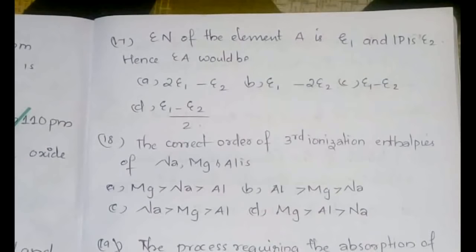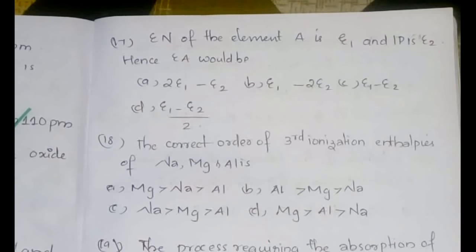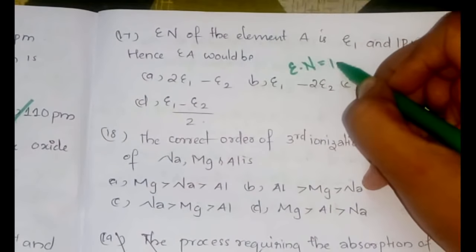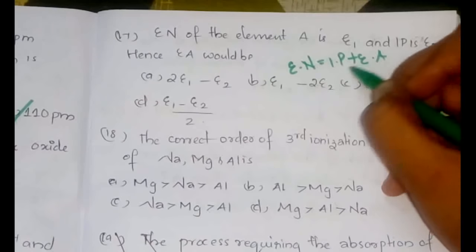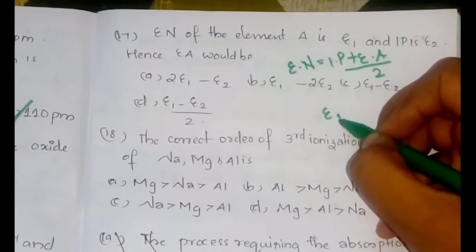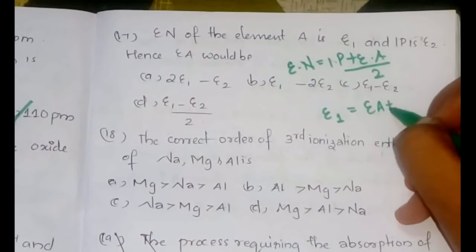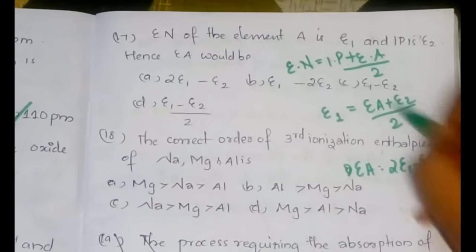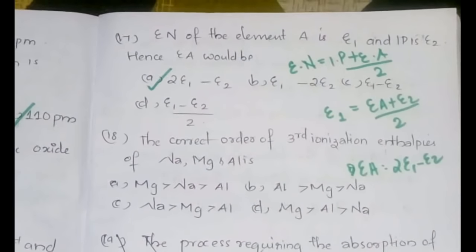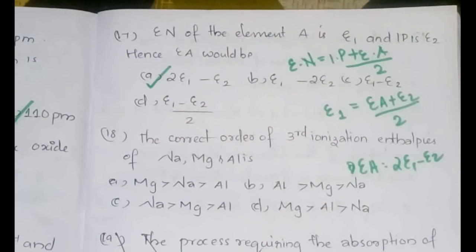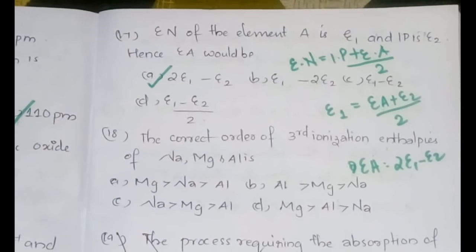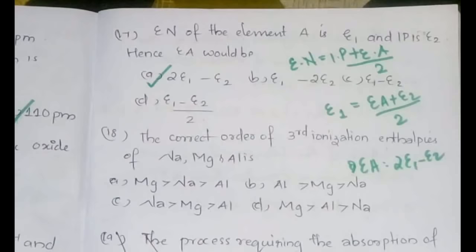The seventeenth question: electronegativity of element A is E1 and the ionization potential is E2, hence the electron affinity would be? Electronegativity can be expressed as: E1 = (Ea + E2) / 2, so electron affinity Ea = 2E1 − E2. Option A is the right answer. This was a question in the IITJEE exam. Remember the Mulliken electronegativity formula: electronegativity equals ionization potential plus electron affinity divided by 2.